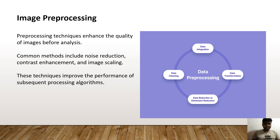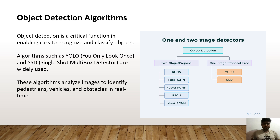Let's move on to image pre-processing. Pre-processing techniques enhance the quality of images before analysis. The main common methods include noise reduction, contrast enhancement and image scaling. These techniques improve the performance of subsequent processing algorithms. This is the diagram of the image processing pipeline, where data is integrated, transformed, reduced, cleaned and filtered.